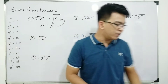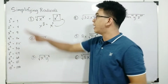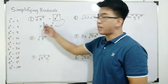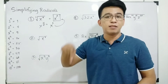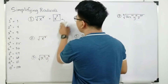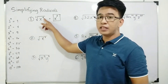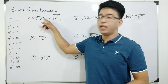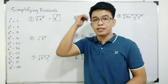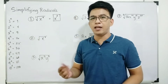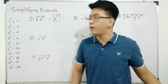Another way to simplify radicals is to convert radical form into rational exponent form. Since x to the fourth power is a perfect square — meaning it is divisible by 2 — we can easily identify that the square root of x to the fourth power is x squared, even without converting to rational exponent form.